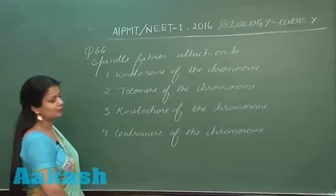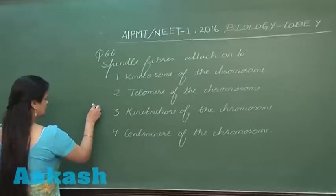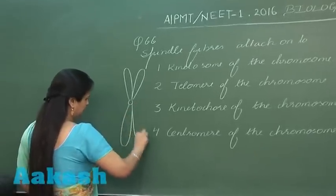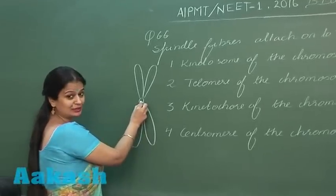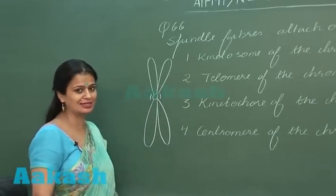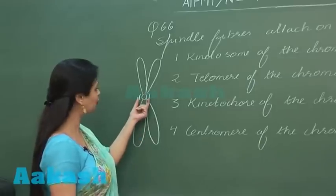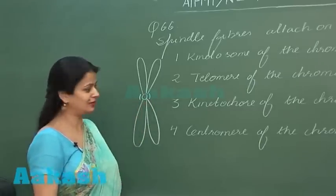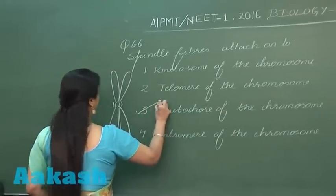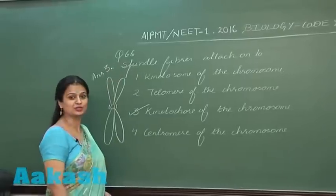We have to look for the right option with respect to the attachment of spindle fibers. In the chromosome, this part represents the centromere. Over the centromere there is presence of a proteinaceous disc. These disc-like structures are kinetochores, and the spindle fibers attach onto kinetochores. So the right answer for question number 66 is option number 3.